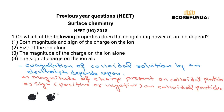The coagulating power of an electrolyte depends on the sign of the charge — whether negative or positive — and on the magnitude of the charge of the ion being used for coagulation.